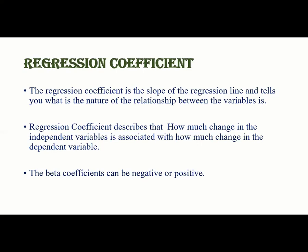The beta coefficient can be negative or positive. If the beta coefficient is positive, the interpretation is that for every one unit increase in the predictor variable, the outcome variable will increase by the beta coefficient value. If the beta coefficient is negative, the interpretation is that for every one unit increase in the predictor variable, the outcome variable will decrease by the beta coefficient value.